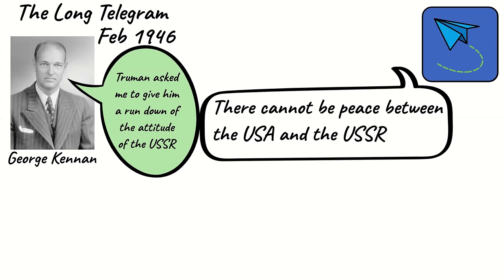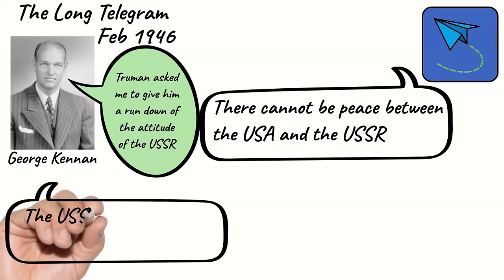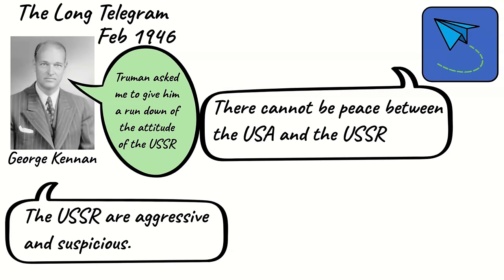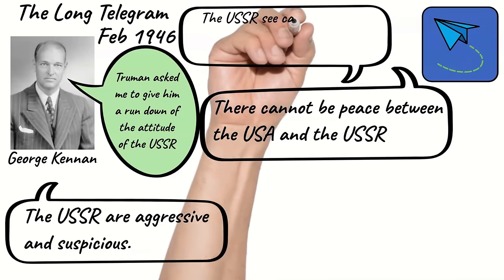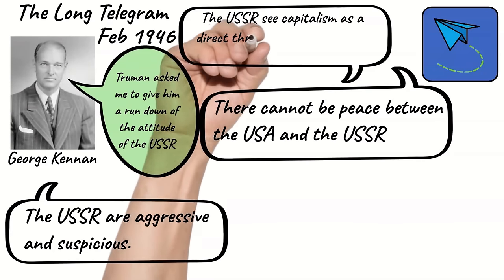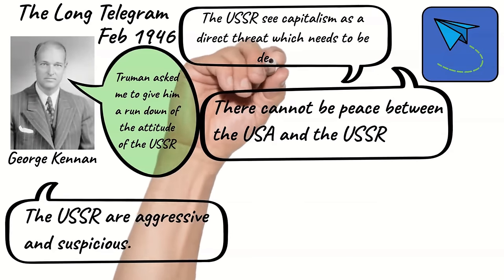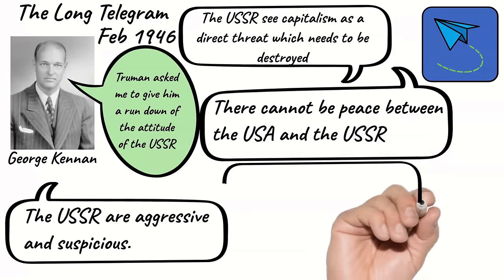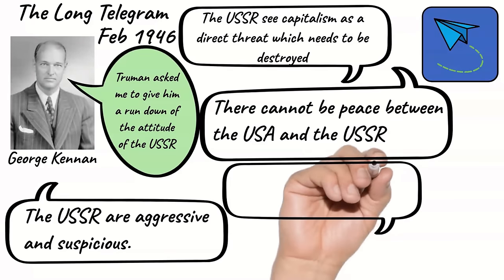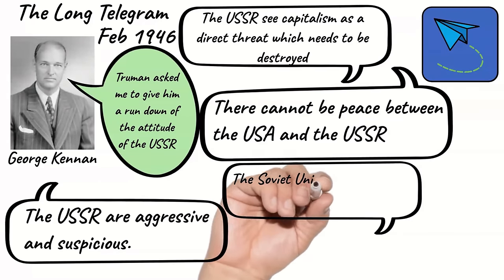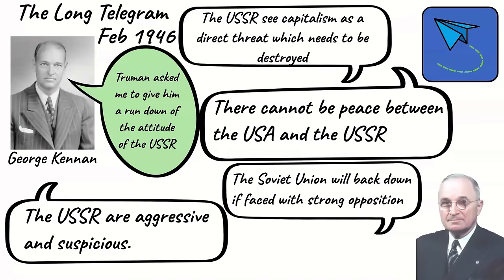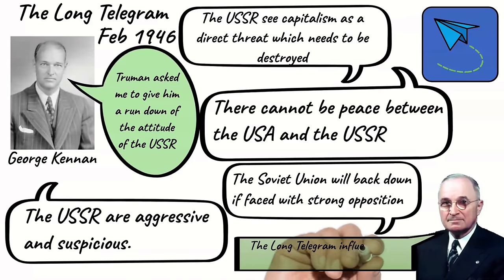Kennan saw the Soviet Union as aggressive and suspicious, and informed them that the Soviet Union were building up their military. He reported that the Soviet Union saw capitalism as a direct threat which needed to be destroyed. However, he did think that the Soviet Union would back down if they were faced with strong opposition. The content of the telegram greatly influenced Truman's policies towards the Soviet Union.